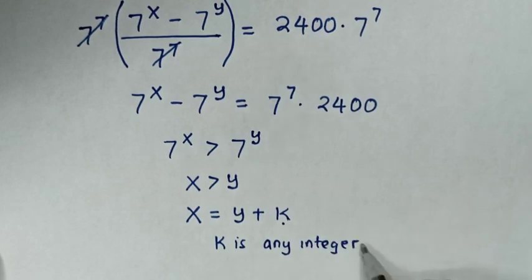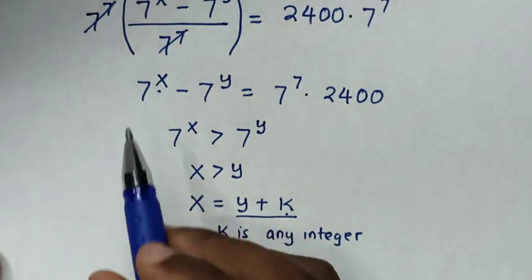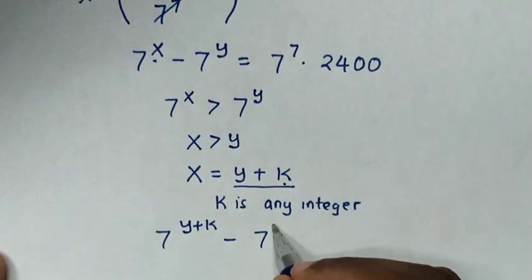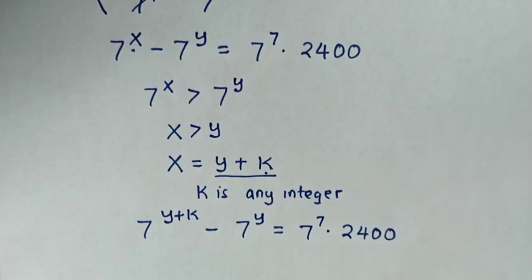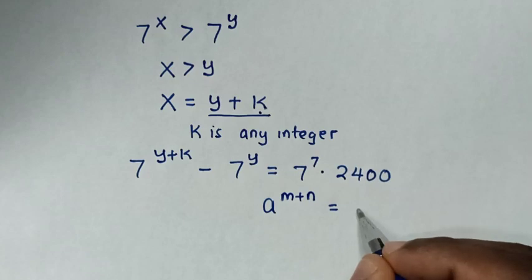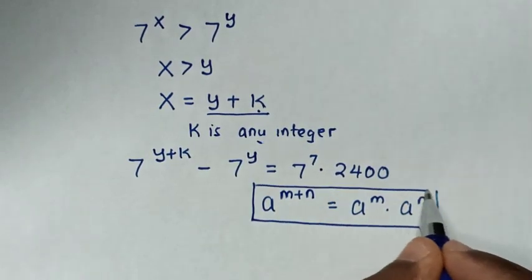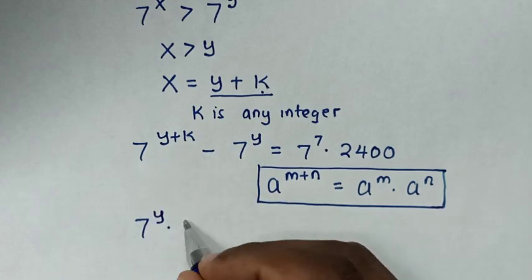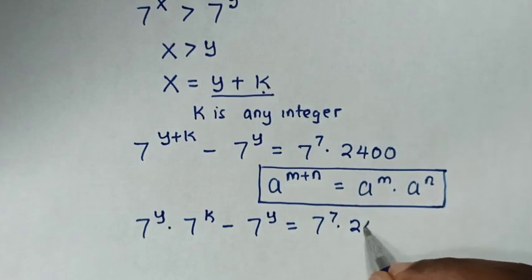Now the relation between x and y is x is equal to y plus k. So we substitute the value of x, which is y plus k, into this power of x. Then our equation would be 7 power of y plus k, minus 7 power of y, is equal to 7 power of 7 times 2400. From the exponent rule, a power of m plus n equals a power of m times a power of n, so it will be 7 power of y times 7 power of k, minus 7 power of y, equal to 7 power of 7 times 2400.